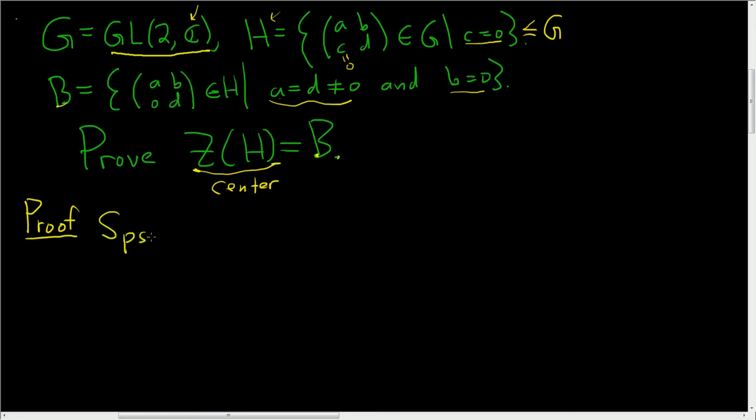Suppose we have a matrix (a, b; c, d) inside the center of H. The center of H is a subset of H, so this matrix is also in H. That means that c equals 0. Because if it's in H, c is equal to 0. Let's rewrite our matrix so I don't keep writing the c.